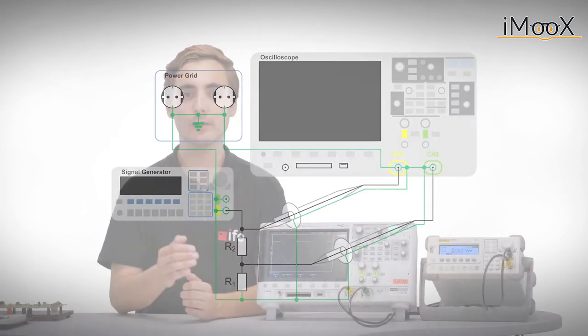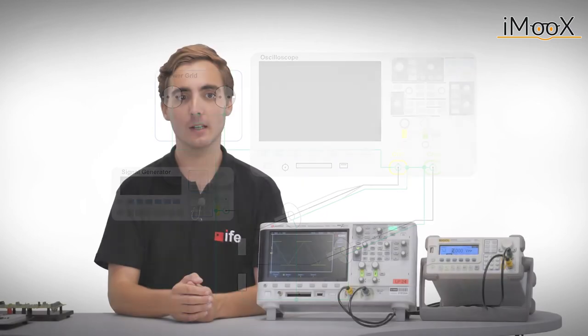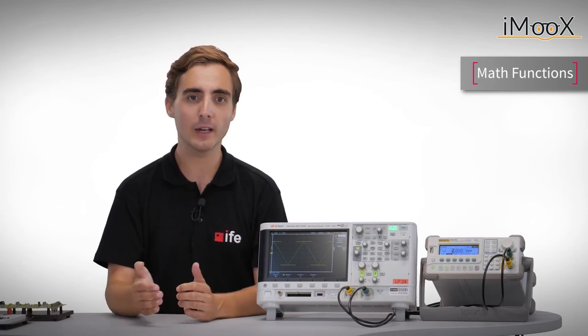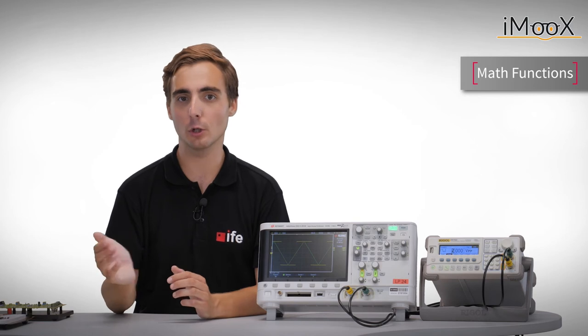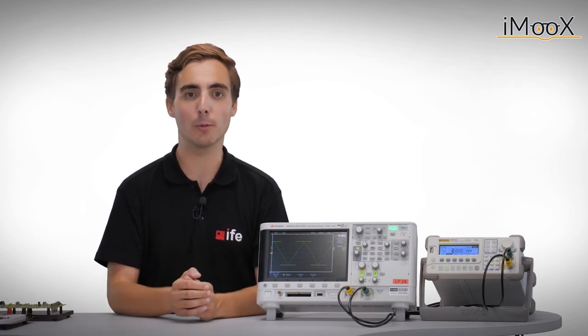As we have mentioned before, we can use math functions to measure differential voltages between two arbitrary points in a circuit. For this approach, we need a difference math function. In this way, we get a proper resistor voltage over time. However, there are also other mathematical operations available.